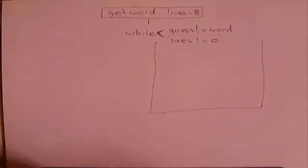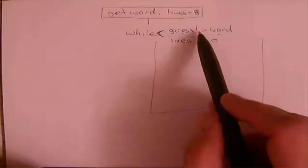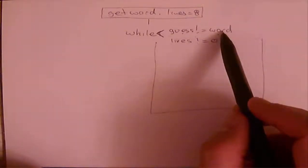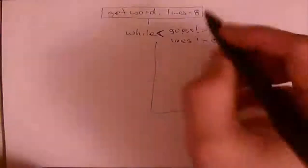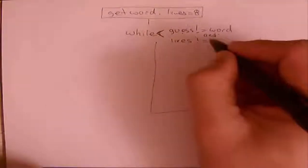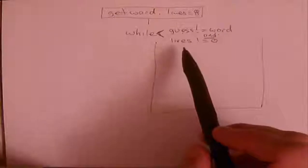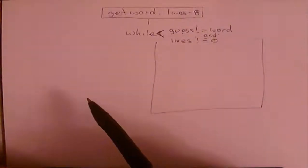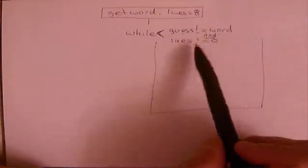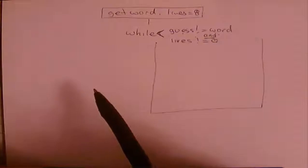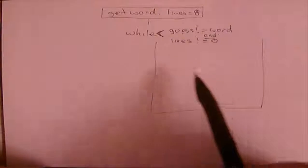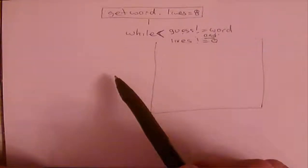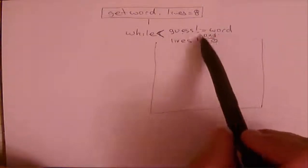We need to think about combining the two conditions with 'and' or 'or'. To stay in the loop, you want the word not to have been guessed and there are still lives left — so it must be 'and'. You'd exit the loop when they guess the word or the lives were zero, but because we're looking at when the guess is not the word and lives are not zero, we combine with 'and'. If either becomes false, we exit the loop.